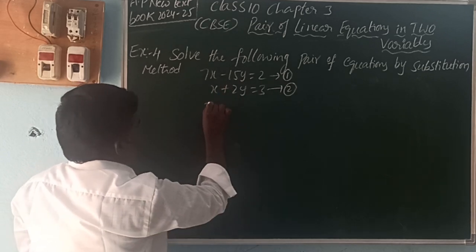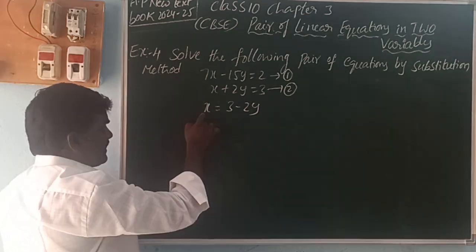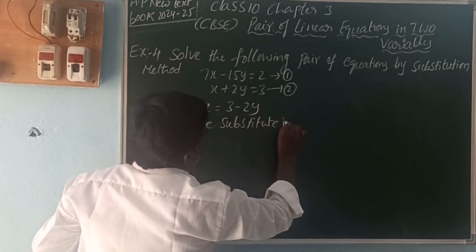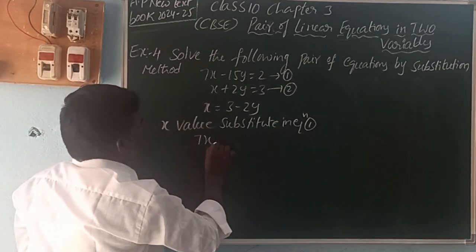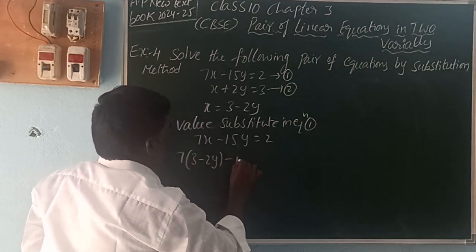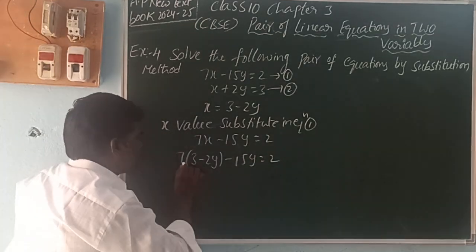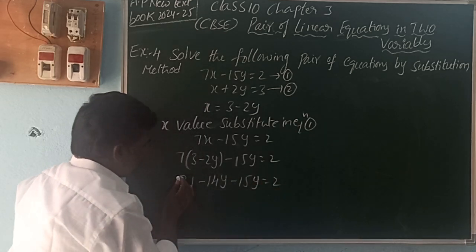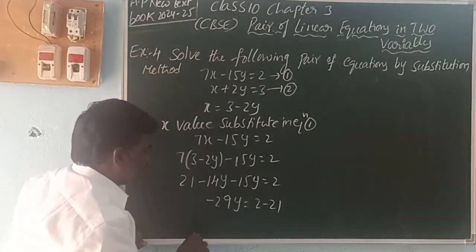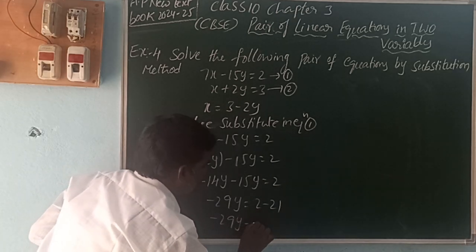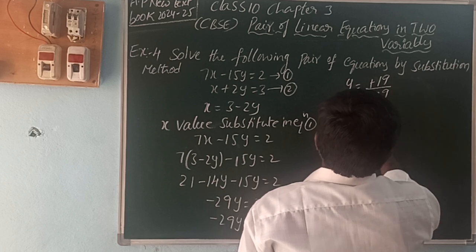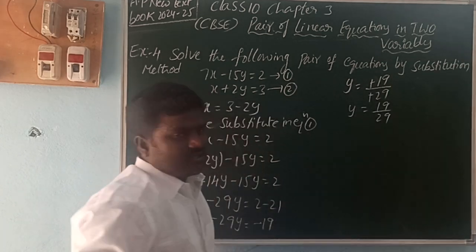So here, for Example 4, I take 7x. 7x means 7 into x. 7 of (3 minus 2y) minus 15y is equal to 2. That gives 21 minus 14y minus 15y is equal to 2. So minus 14y minus 15y gives minus 29y is equal to 2 minus 21. So minus 29y is equal to minus 19. Therefore, y is equal to 19 by 29.